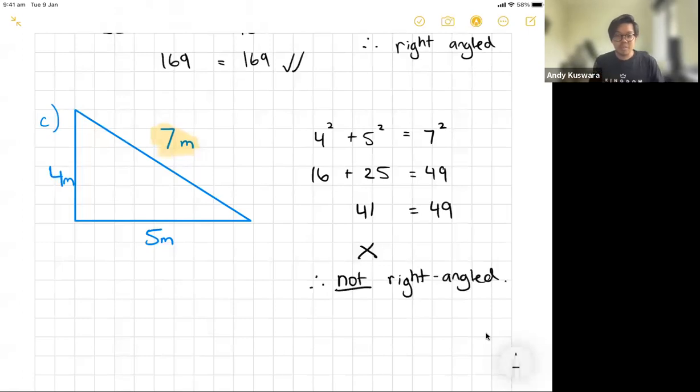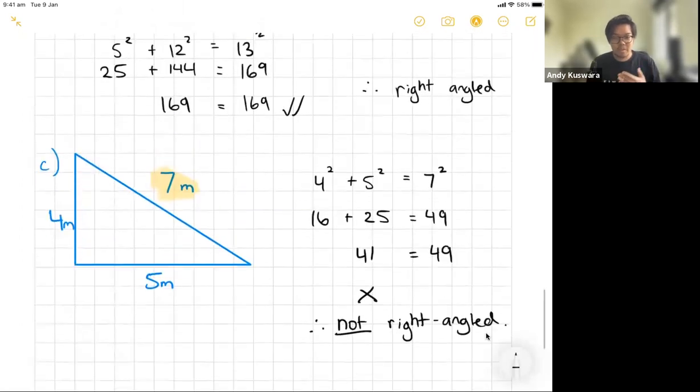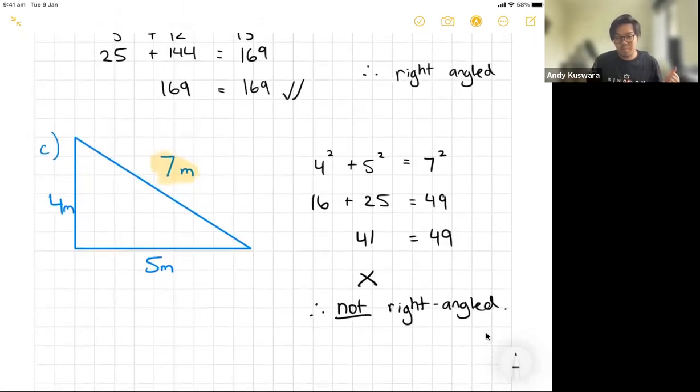I'll keep it nice and short for today. Hopefully that helps out with your exercises. Just remember the important thing: find the longest side first and then using the formula and just trying to see if it holds up. If it works, then it's good, it's a right angle triangle. If it doesn't work, then it's not right angled. Hopefully that helps for your exercises and I'll catch you guys next time. Bye!